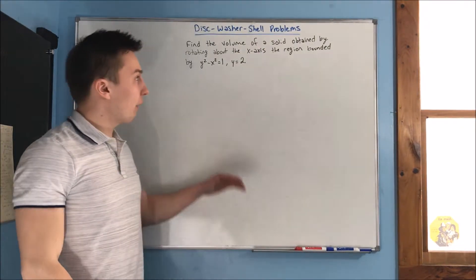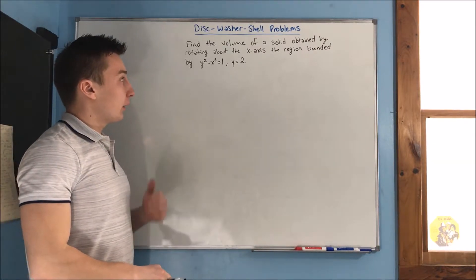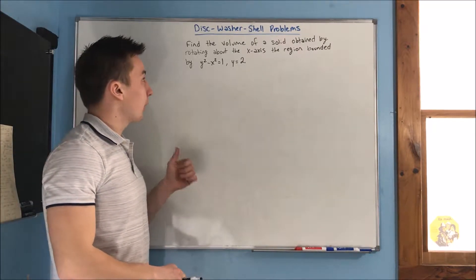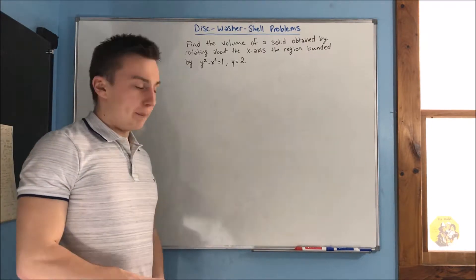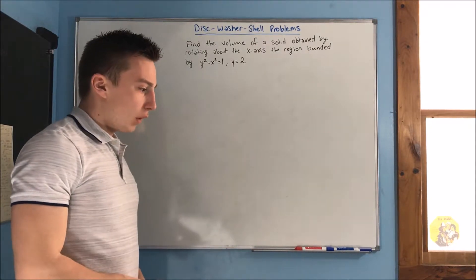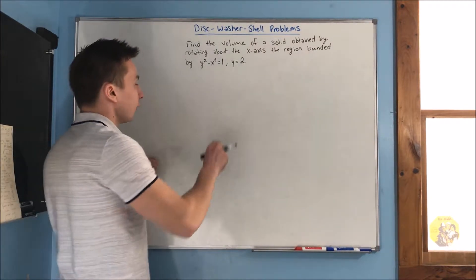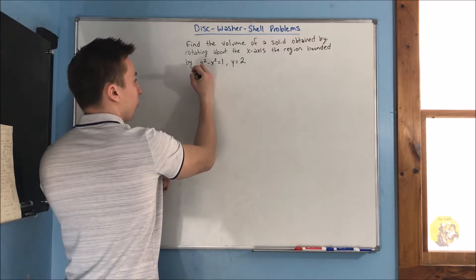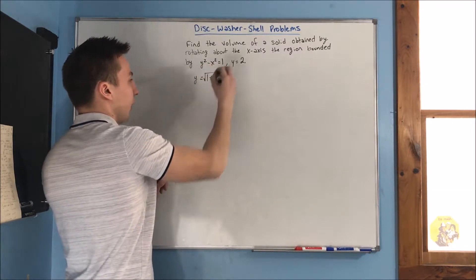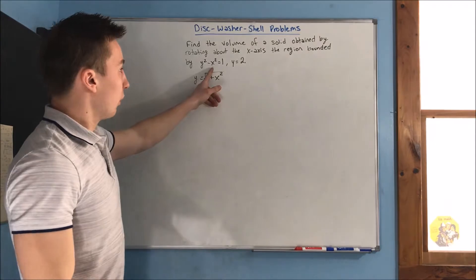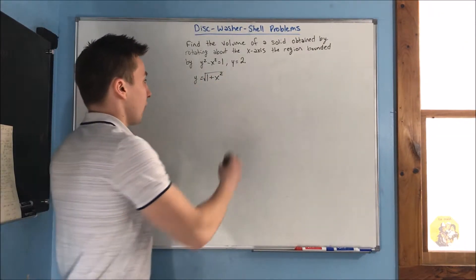Our second problem: find the volume of a solid obtained by rotating about the x-axis the region bounded by y squared minus x squared equals 1 and y equals 2. Solving for y gives us y equals the square root of 1 plus x squared, and we also have y equals 2.